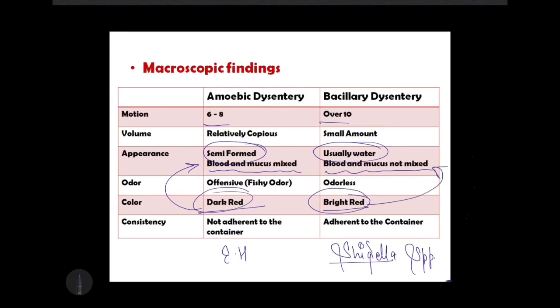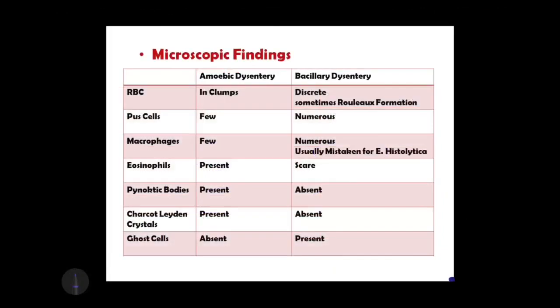In bacillary dysentery, the stool color is bright red because the blood and mucus are separated. Additionally, the stool of amoebic dysentery does not adhere to the container, whereas in bacillary dysentery it attaches or gets stuck to the container. These are the macroscopic findings.